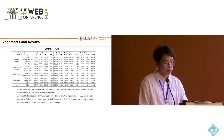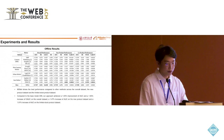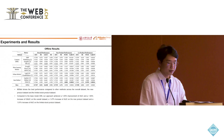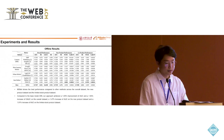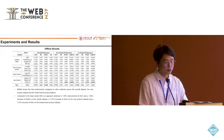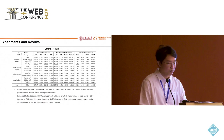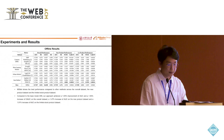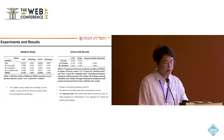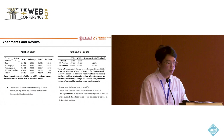MSNet shows the best performance compared to all other methods across the overall dataset, the new product dataset, and the limited stock product dataset. Specifically, compared to the base model DIN, our approach achieved more than 1% improvement in AUC and 1.9% increase in GAUC on the overall dataset, a 1.4% increase in AUC on the new product dataset, and over 1% increase in AUC on the limited stock product dataset. The ablation study verified the necessity of each module, with the auxiliary loss module making the most significant contribution.